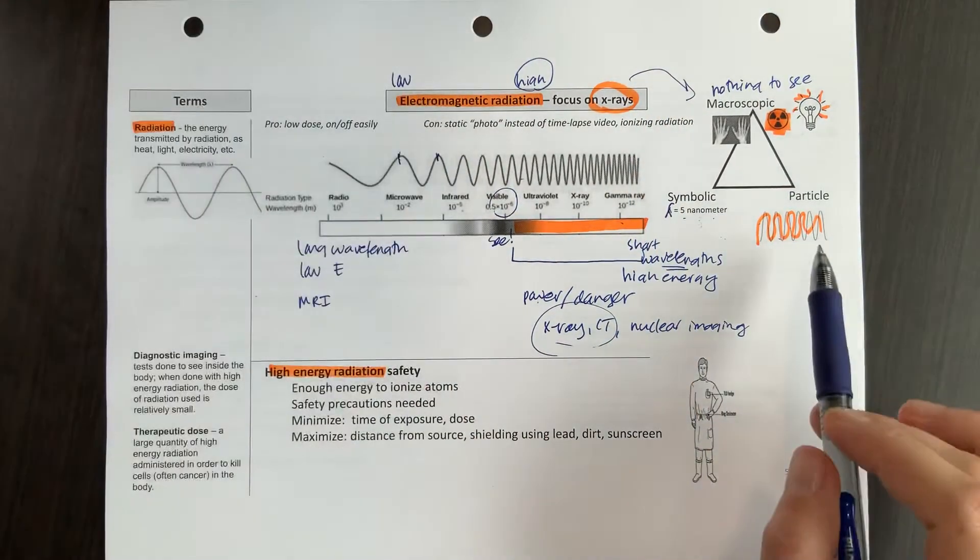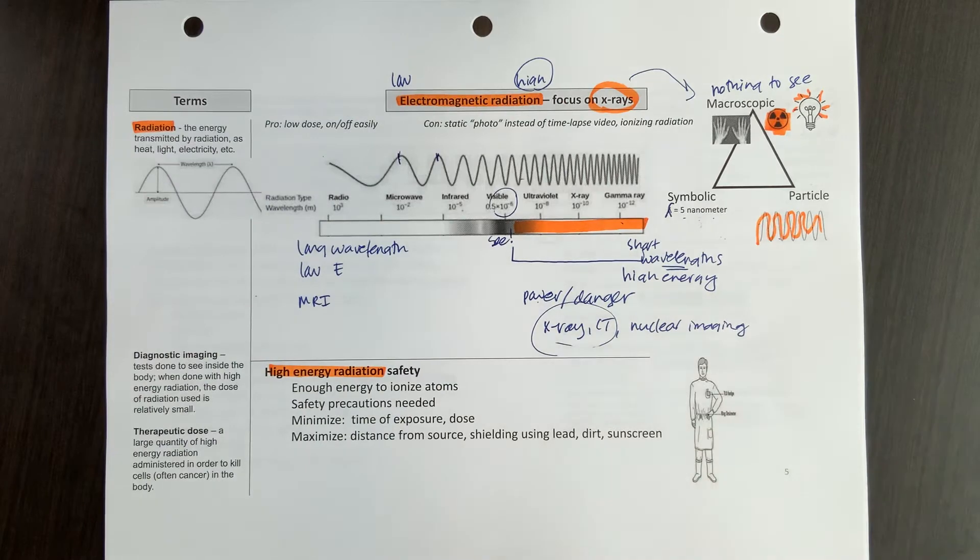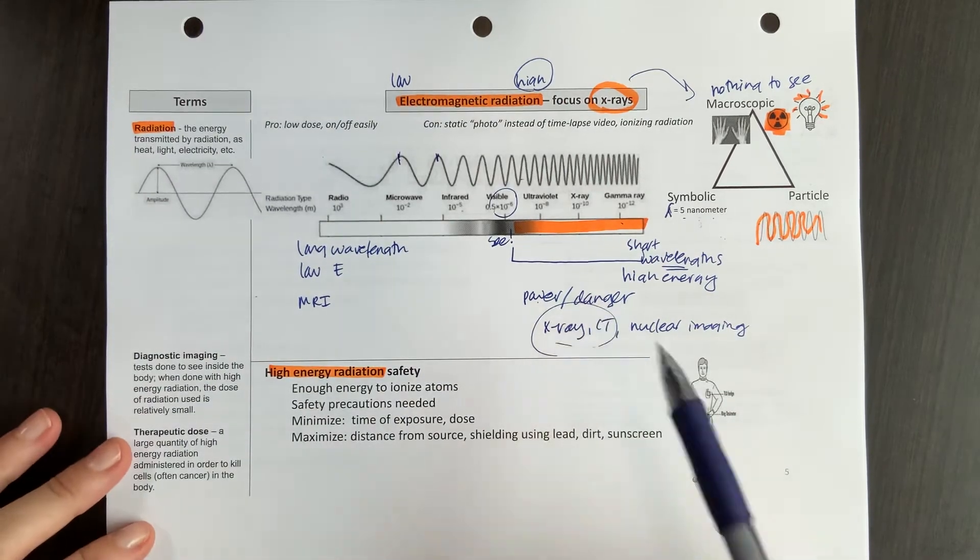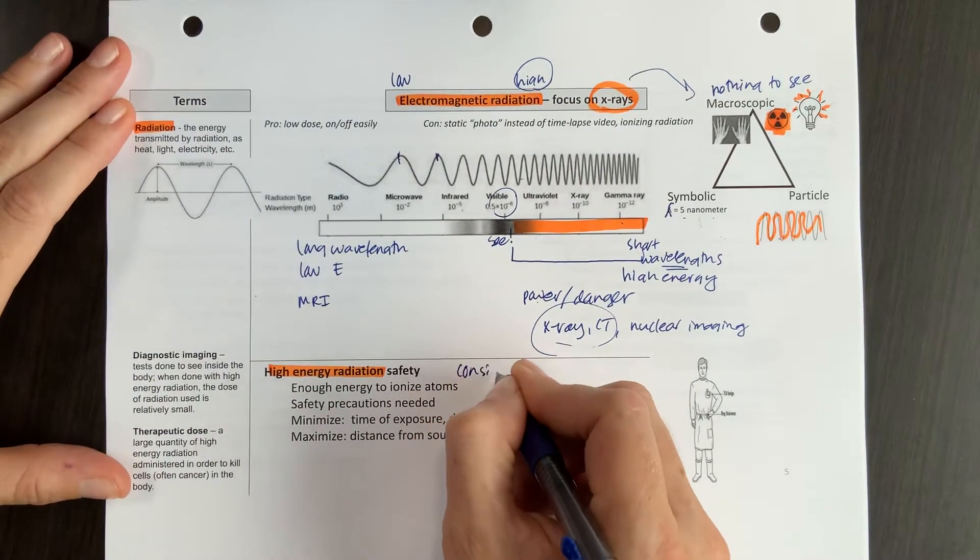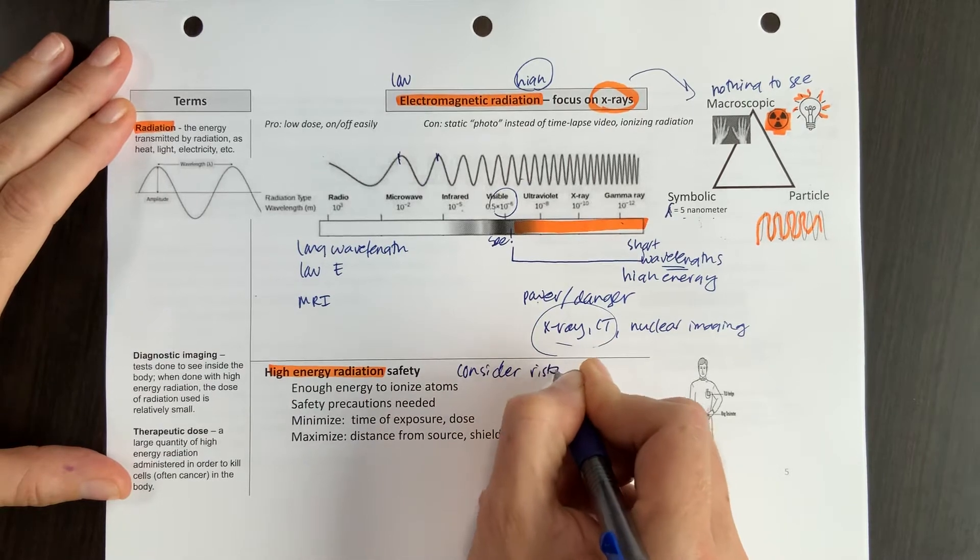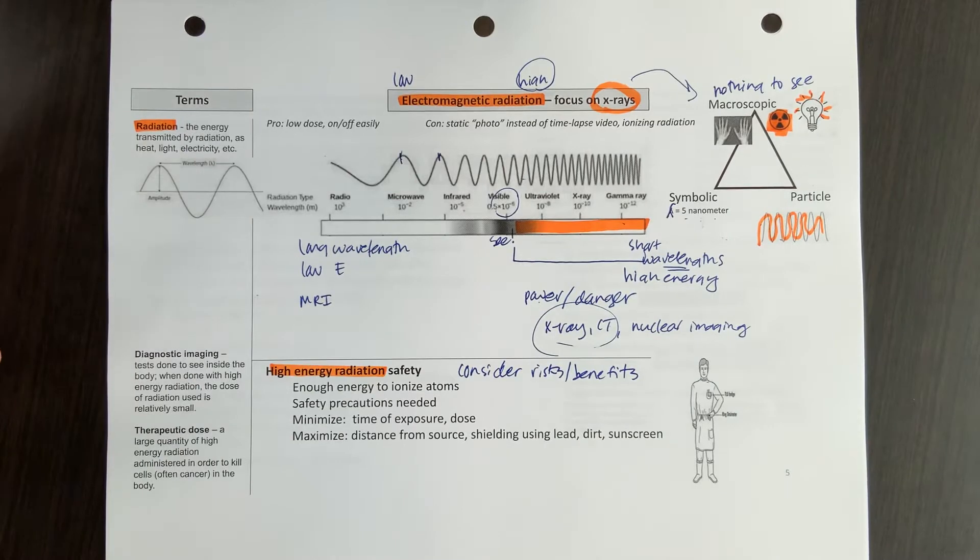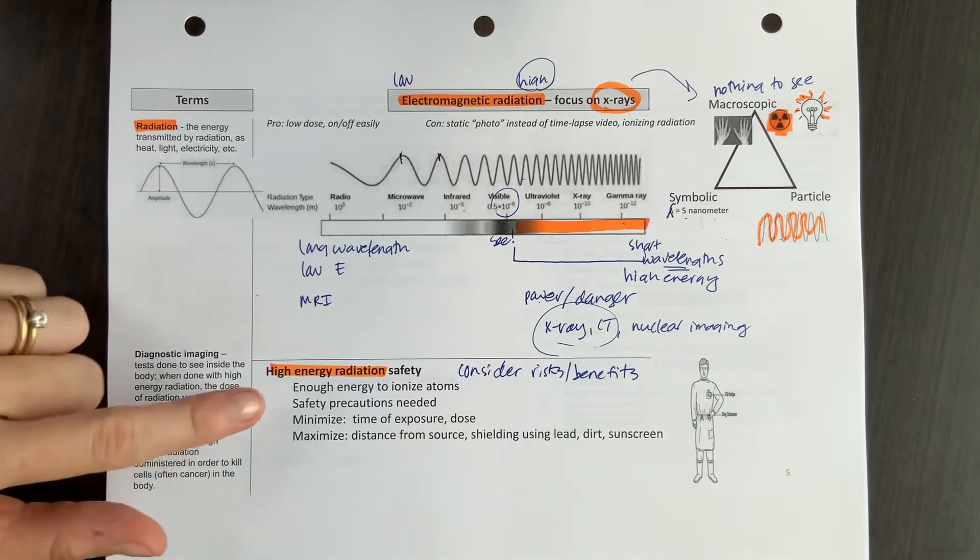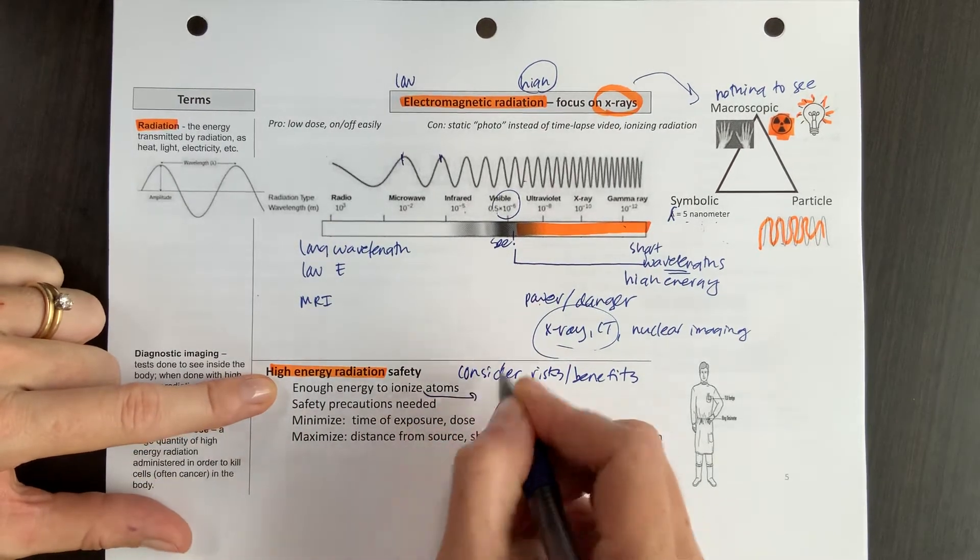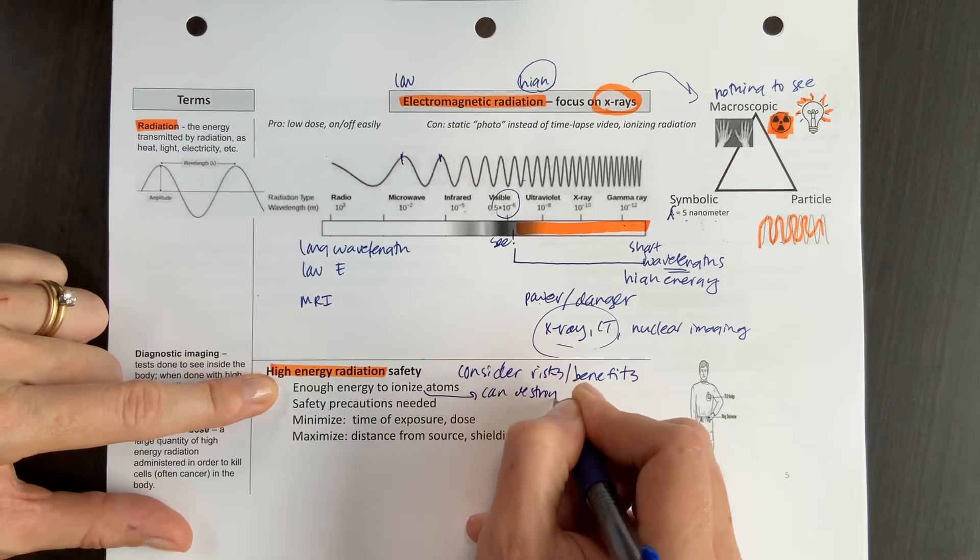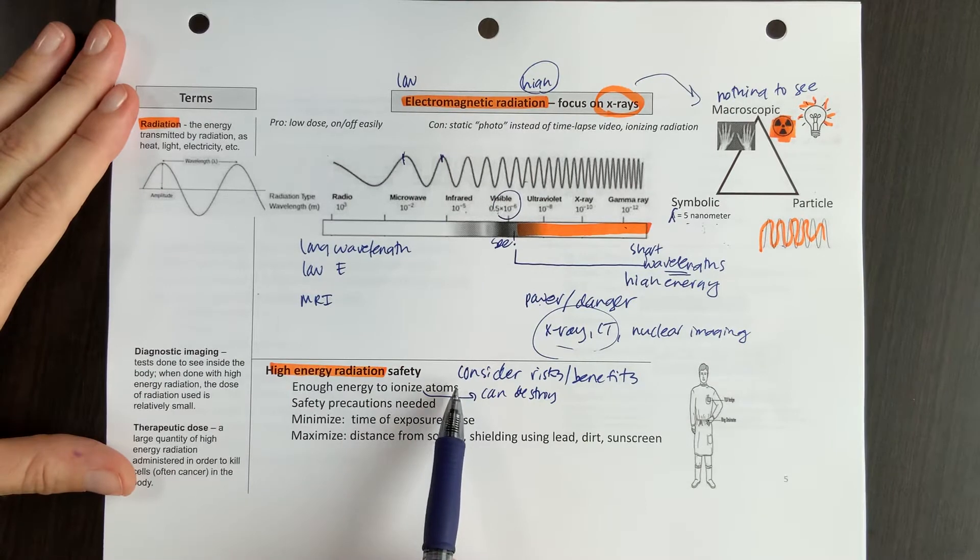Now, wherever your orange energy comes from, whether it's coming from a nucleus or just from a light bulb, we have to be careful. This is that danger piece. So with high energy radiation, we have to consider our risks and our benefits. Because just because something's dangerous doesn't mean you should never use it. We want to consider the risks and the benefits. So high energy radiation has enough energy to ionize atoms. Ionizing sometimes can destroy those atoms or cause them to destroy other atoms. So this is the danger piece. We have to be safe.